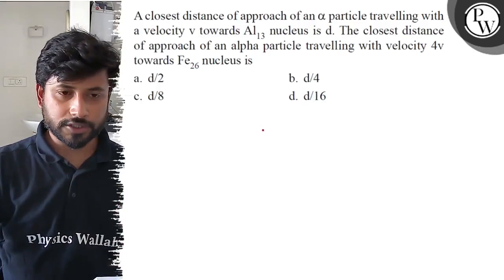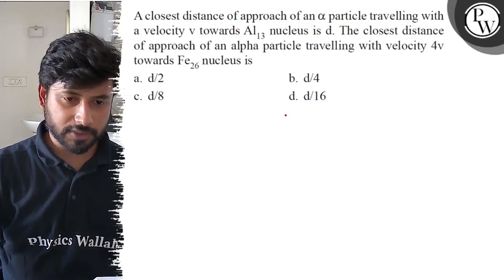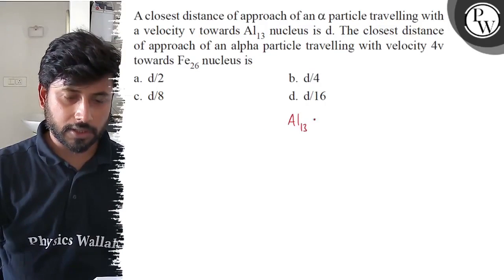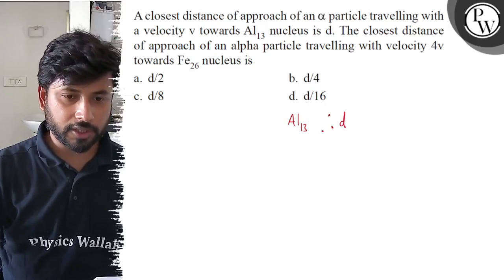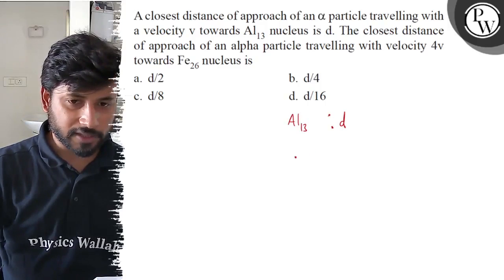The closest distance of approach of an alpha particle traveling with a velocity V towards aluminum-13 nucleus is D. The closest distance of approach of an alpha particle traveling with a velocity 4V towards the same nucleus is...